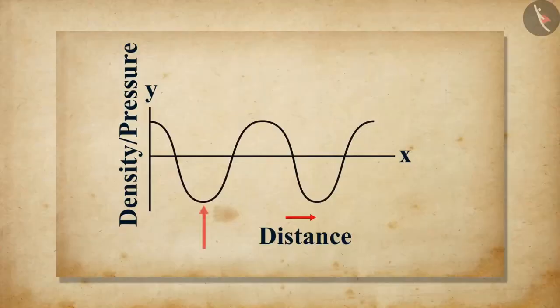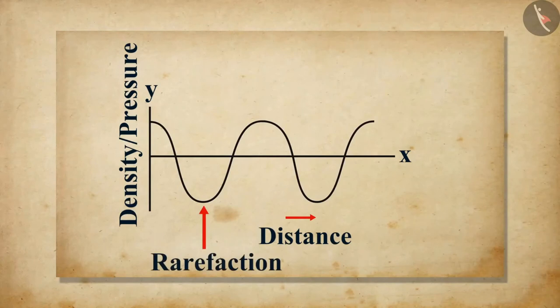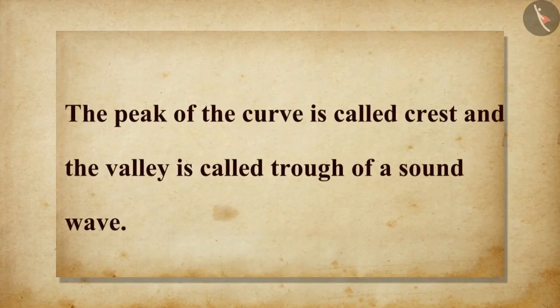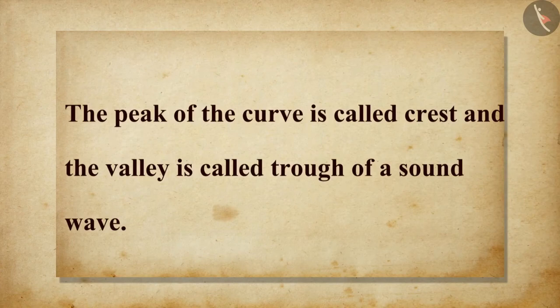The regions of low pressure, where particles are spread apart, are rarefactions. They are represented by the lower portion of the curve. The peak of the curve is called crest, and the valley is called trough, of a sound wave.